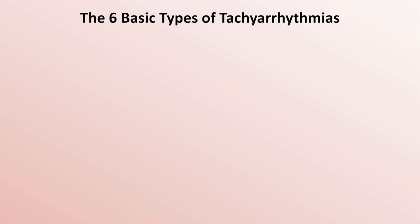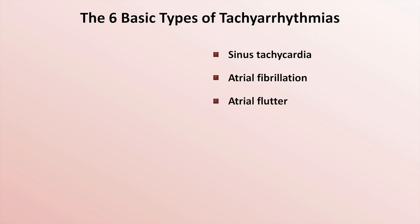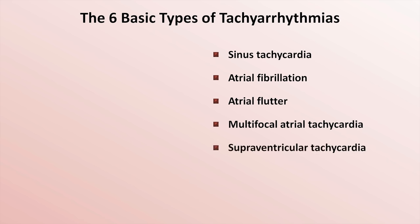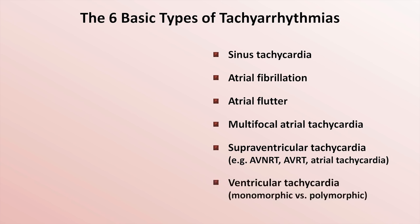In no particular order, they are sinus tachycardia, atrial fibrillation, atrial flutter, multifocal atrial tachycardia, supraventricular tachycardia — which is an umbrella term inclusive of more specific rhythms with confusing acronyms like AVNRT and AVRT, along with something called atrial tachycardia — and finally ventricular tachycardia, which can be subdivided into monomorphic and polymorphic subtypes.